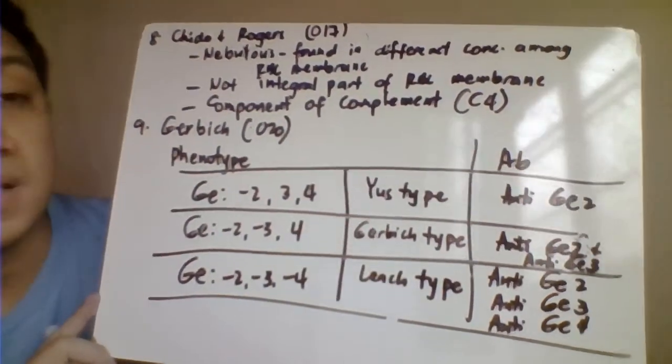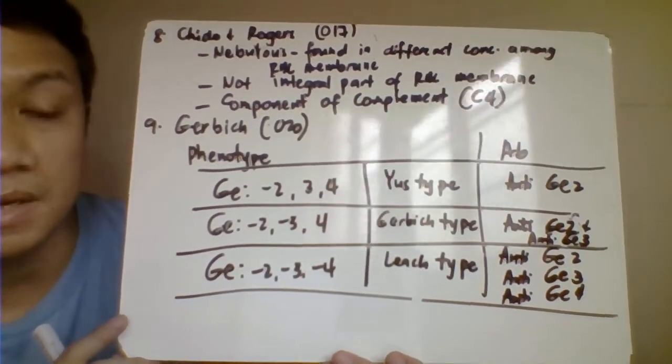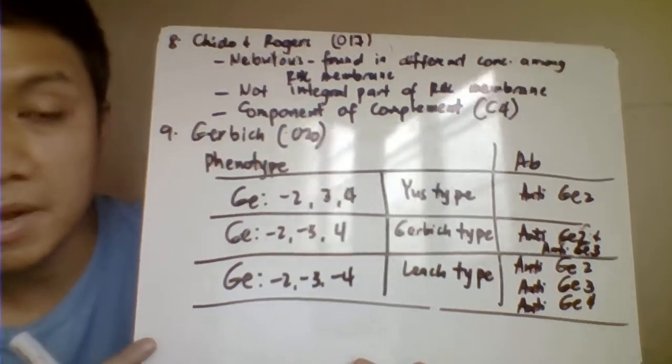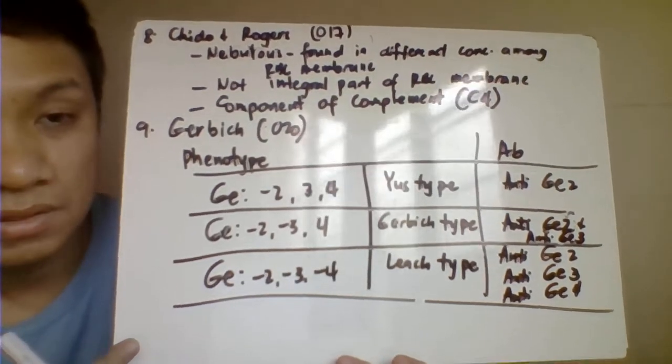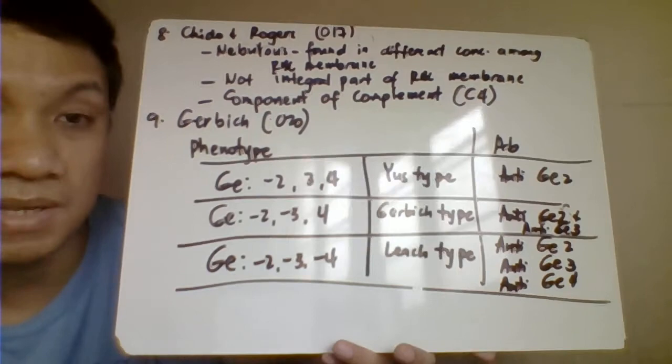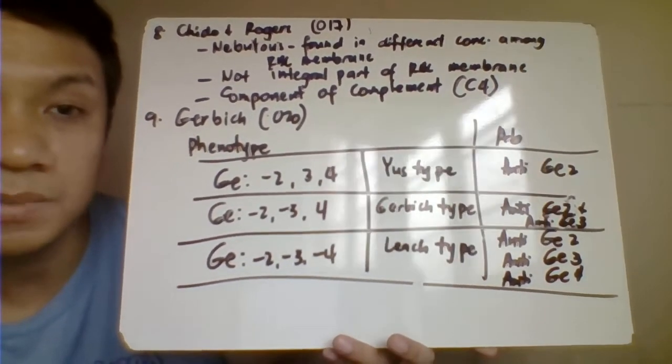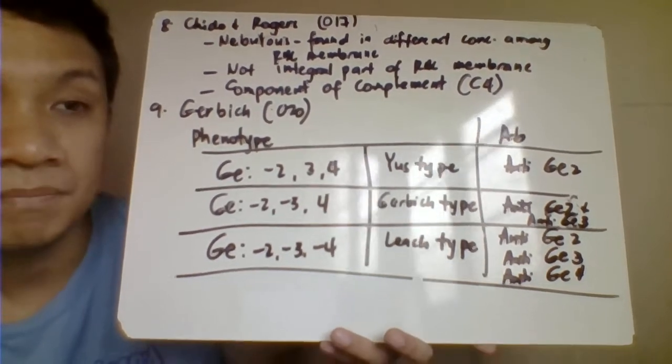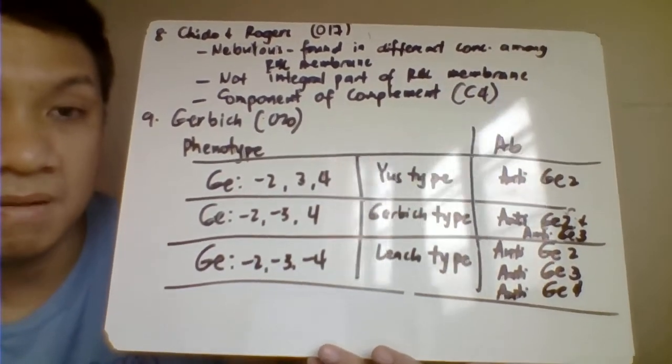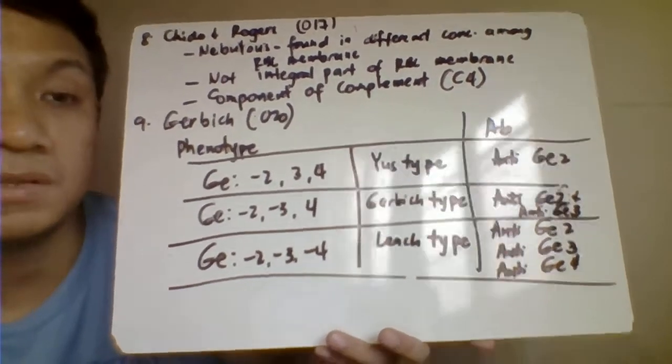Then we also have Chido Rogers, 017 ISBT classification number. This blood group system is nebulous, meaning this one would have different antigenic expression in the RBC membrane. Just like our Lewis blood group system, this one is also not an integral part of the RBC membrane. This is just a component of your complement component, your C4.